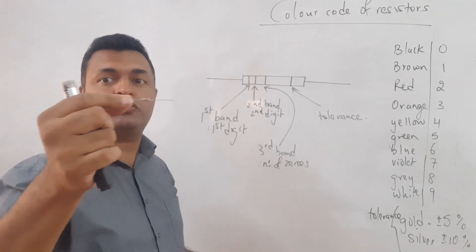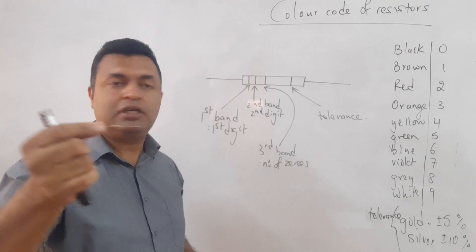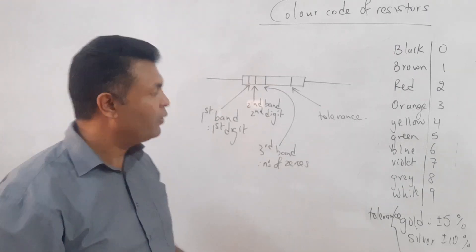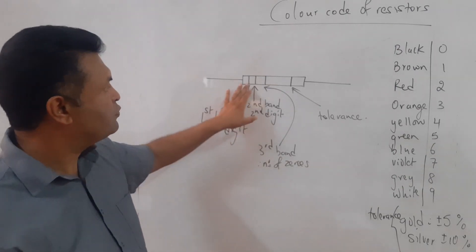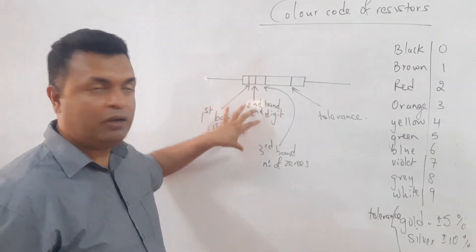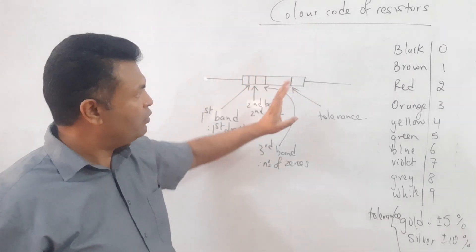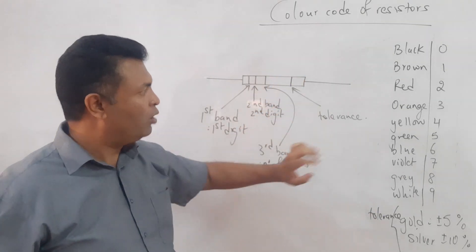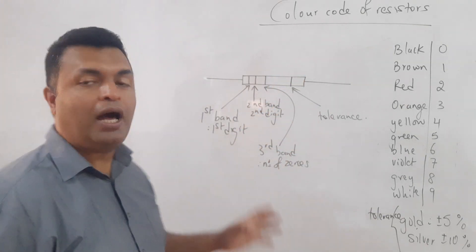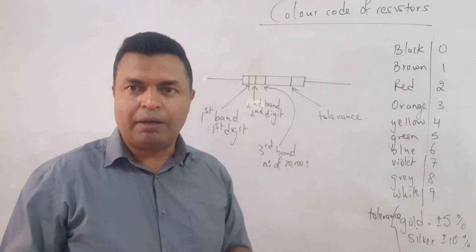The first three bands that are close to each other give you the value of the resistor, and the fourth band, which is slightly apart, gives you the tolerance. Tolerance means the resistor may have a range of values.